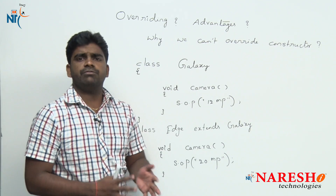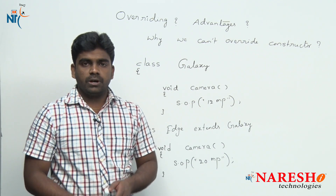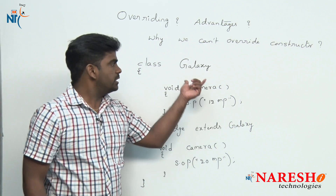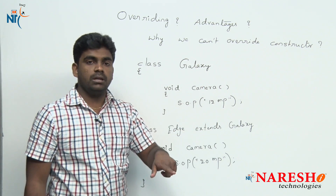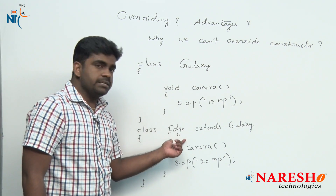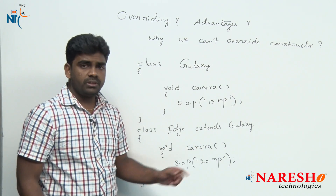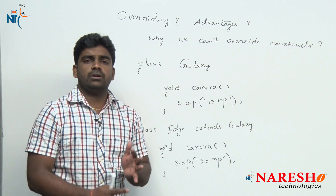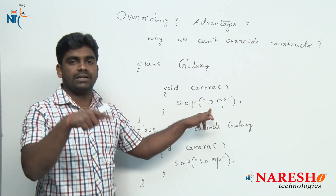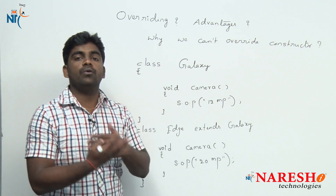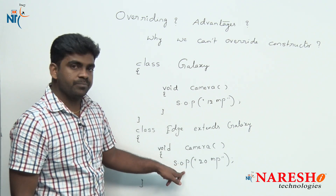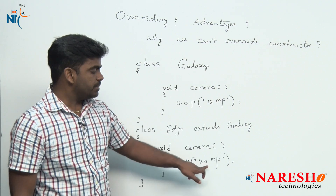Then why are you overriding? Definite question. Why we are overriding means — what, only one answer simply: whatever the functionality, the existing functionality available in this object is not suitable for the extended version. It is advanced, it is the next version, it is a future release. So for this, it is not suitable. The name is the same — we cannot change the name. Camera, always we can call it as camera only. Then what we have to do — we have to rewrite the logic. For rewriting, we should override the method. We are rewriting from 12 megapixel to 20 megapixel.